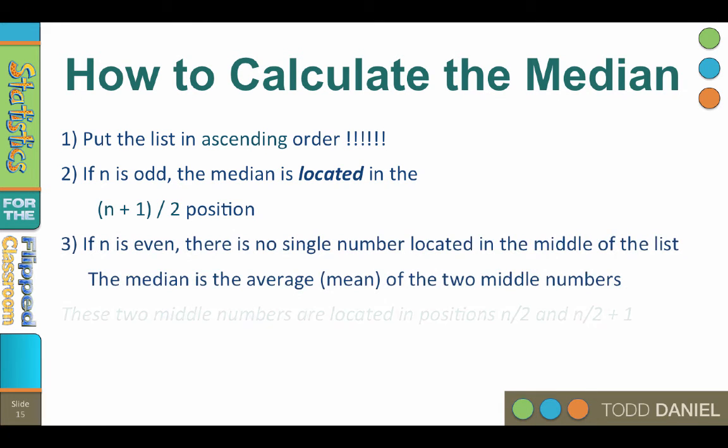Now if the total number in your sample is even, then the median is actually going to be between two numbers that are located in positions n divided by 2 and n divided by 2 plus 1. If the numbers are the same, then that is your median, but if the numbers are different, then you would average them to find the median.